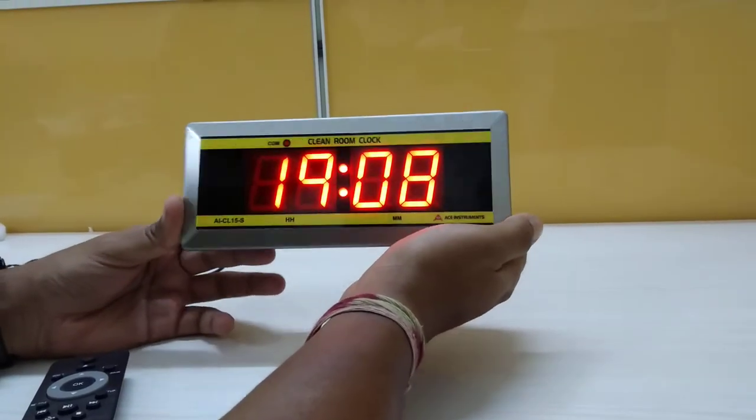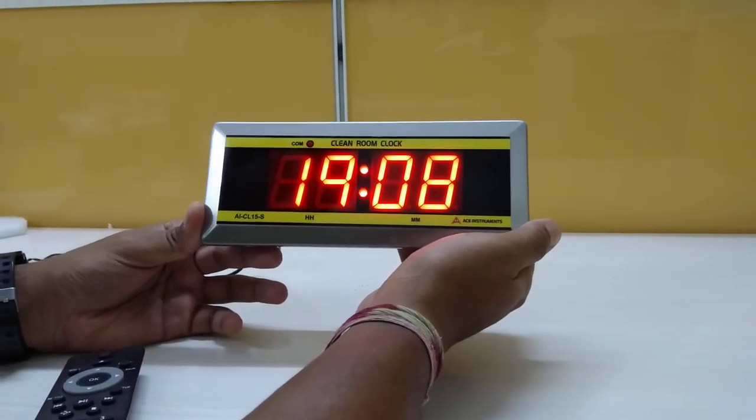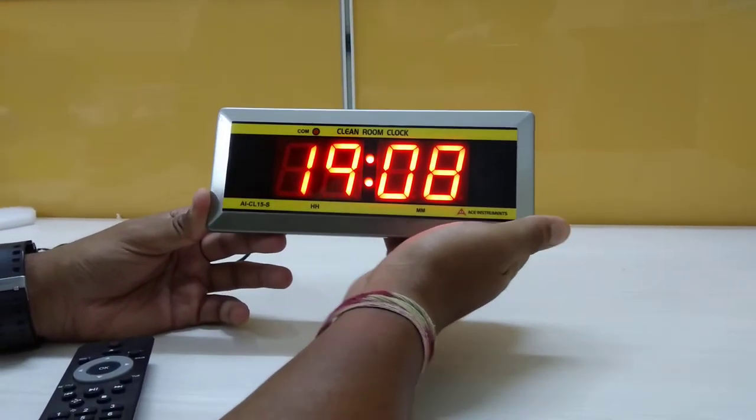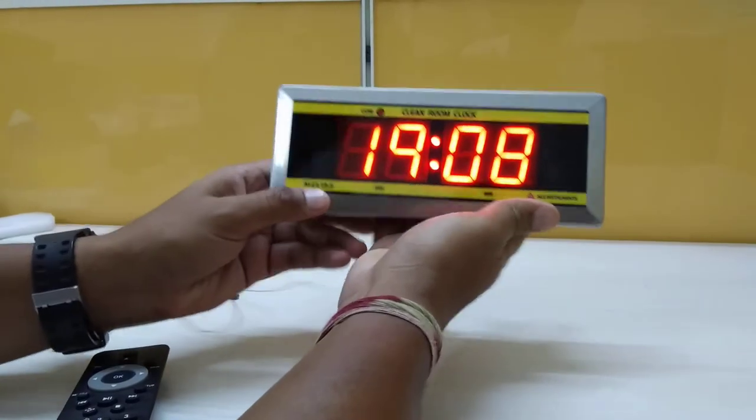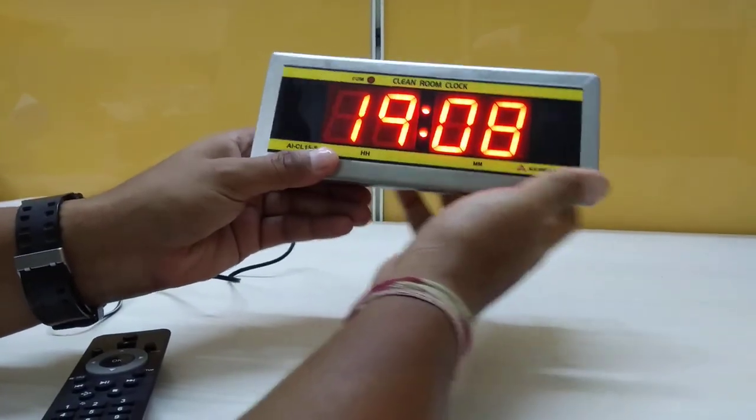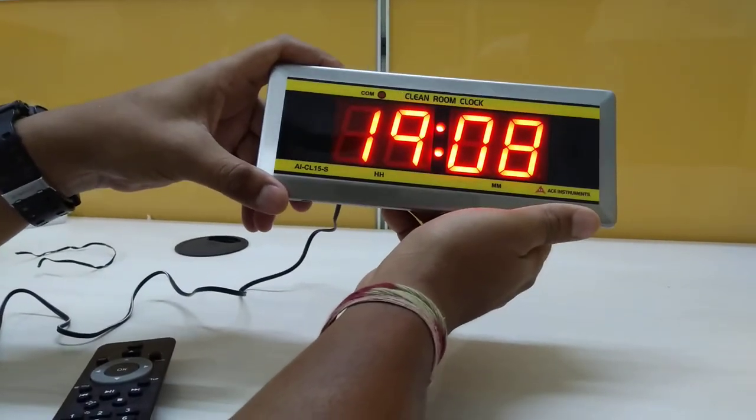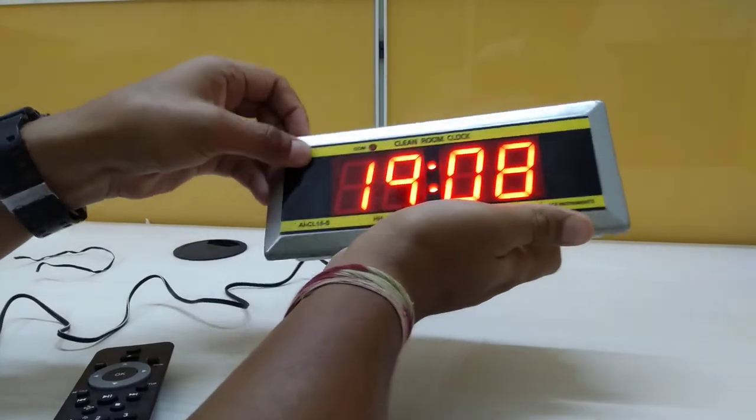Hi, I am going to walk you through this clean room clock manufactured by Ace Instruments. The model number for this is AICL 15S. This clock is particularly used in clean rooms and the finish is made perfectly suitable for the clean room environment.